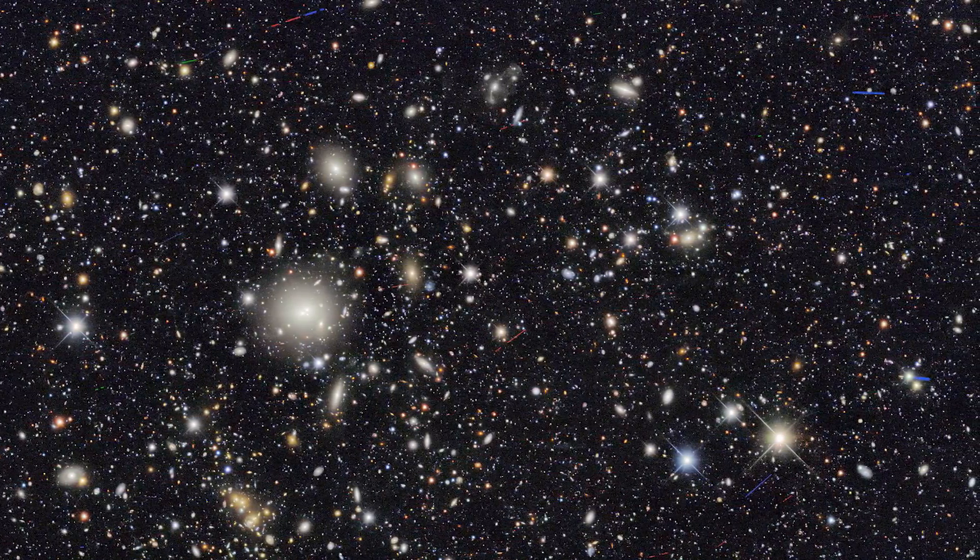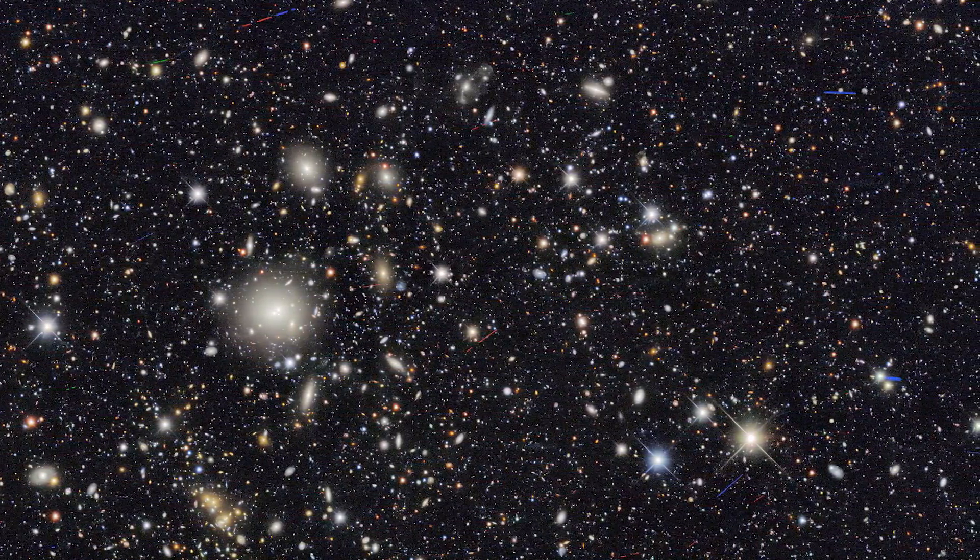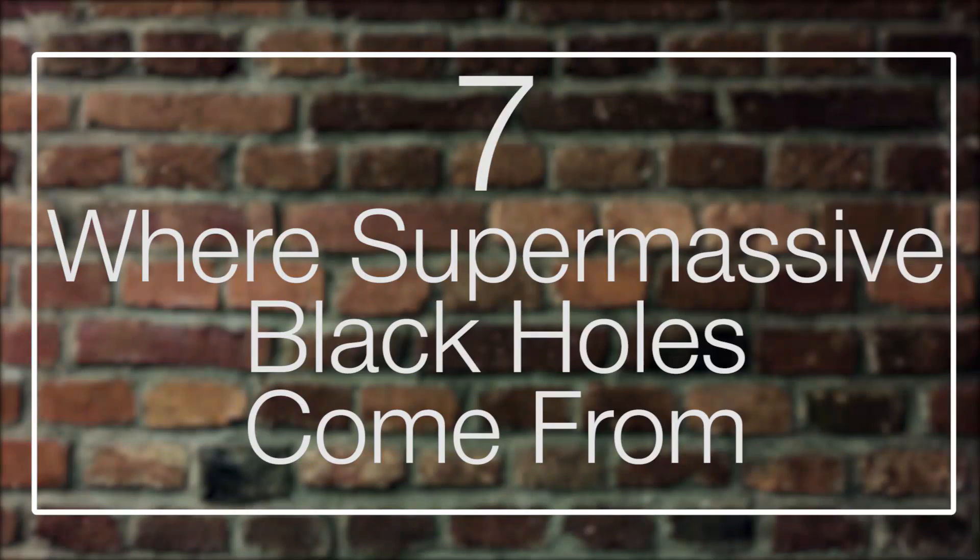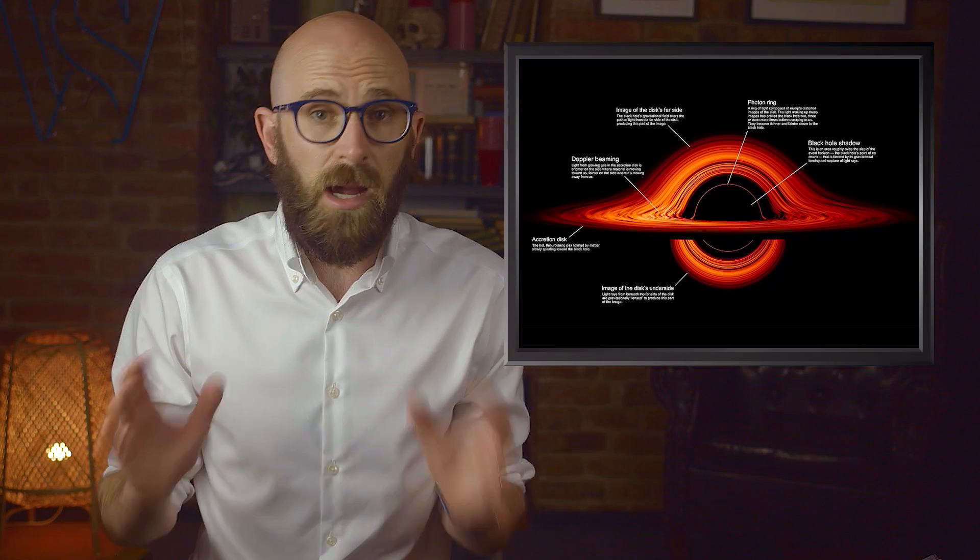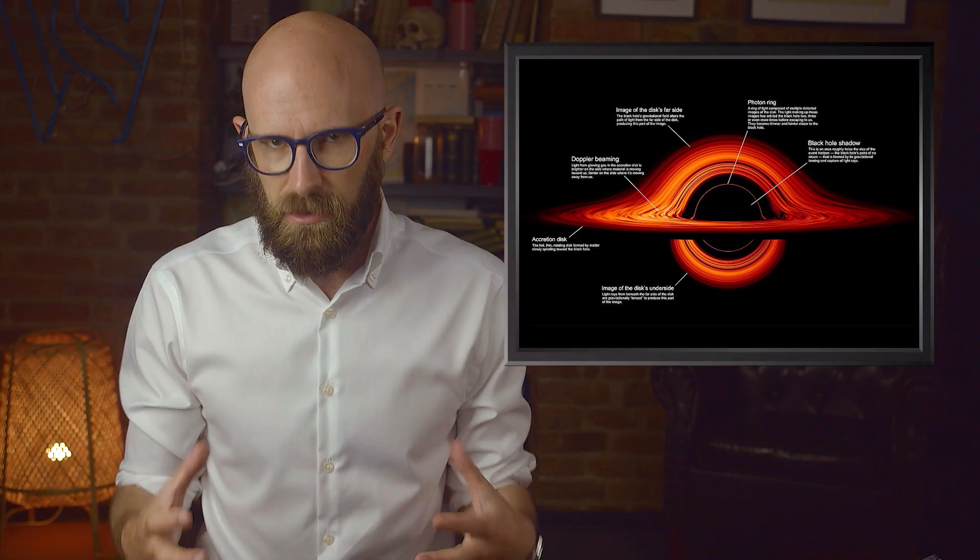Number seven: Where supermassive black holes come from. Black holes are tricky things for more reasons than you might think. Science fiction has made them fairly well known, and on some basic levels most people understand that a black hole is a supermassive astral body with so much gravity that even light can't escape.